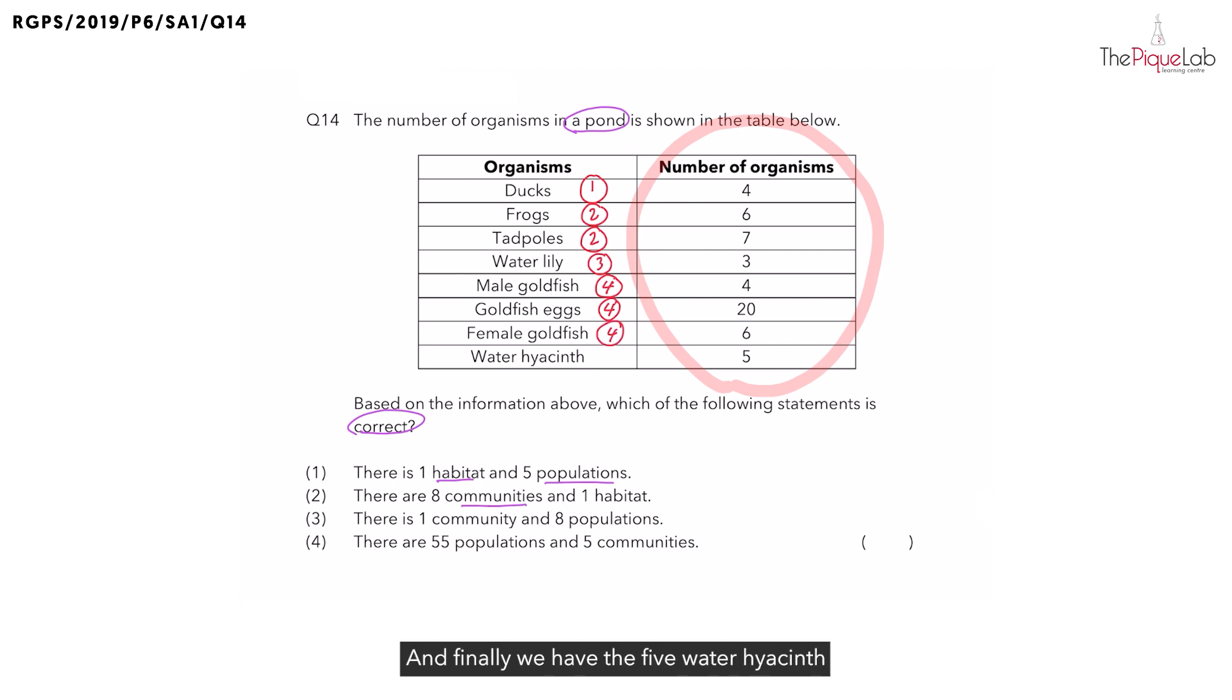And finally, we have the five water hyacinth. That would make up the fifth population. So, we have a total of five populations of organisms living together in this pond.